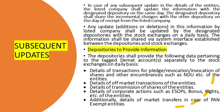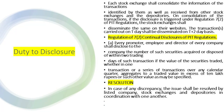Additionally, details of corporate actions such as ESOPs, bonus, rights, etc. of the entities, as well as details of market transfers, shall be provided. Each stock exchange shall consolidate the information of the transactions identified by them as well as received from other stock exchanges and depositories. On consolidation, if a disclosure is triggered under Regulation 7(2) of the PIT Regulations, the stock exchange shall disseminate the same on their websites.